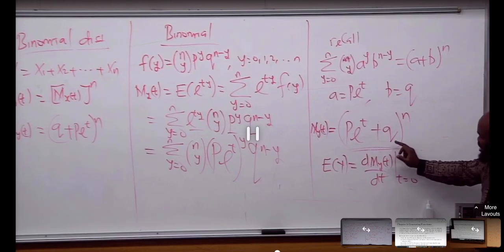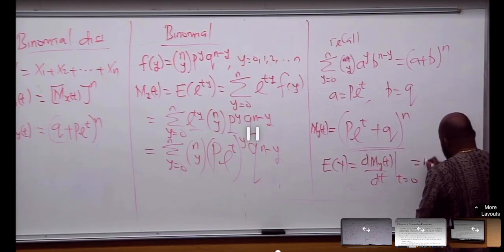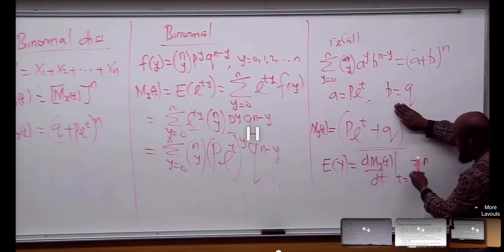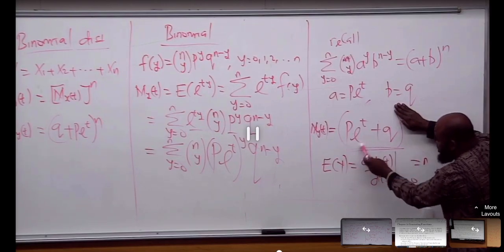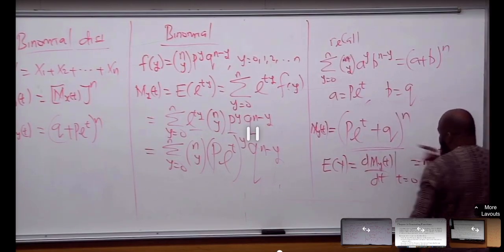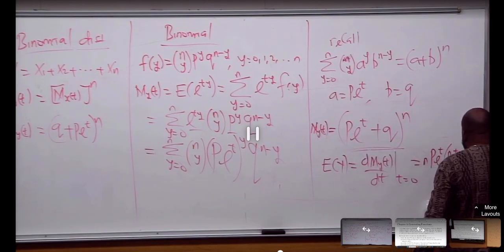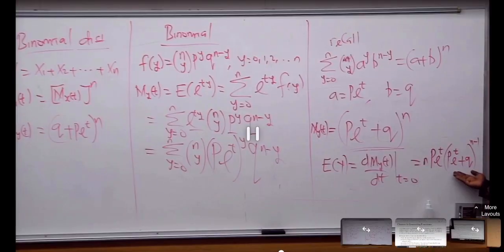This is a composite function. How do I differentiate this with respect to t? This guy is going to come down, differentiate inside. With respect to t, this term is going to be 0. Then you're going to rewrite the whole thing, rest to power n minus 1. This is the derivative of this guy.